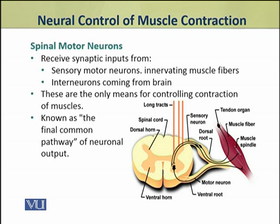First, sensory neurons provide inputs to the spinal motor neurons — these sensory neurons innervate the muscle fibers. The second source is long-tract interneurons coming from the brain, which also provide inputs to the spinal motor neurons.